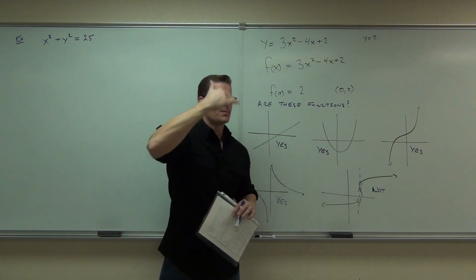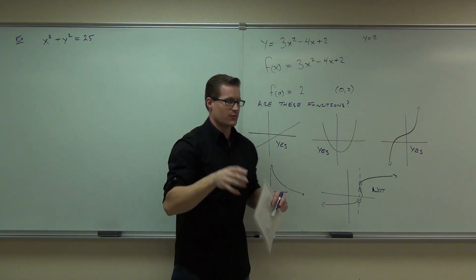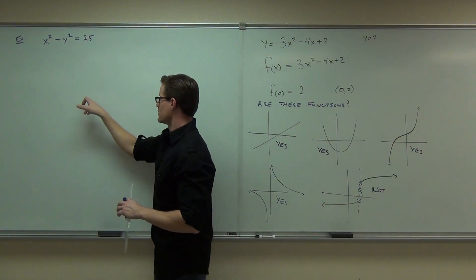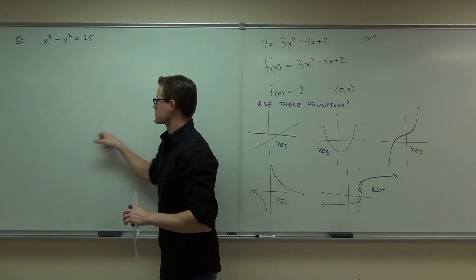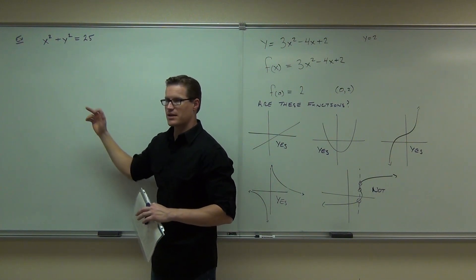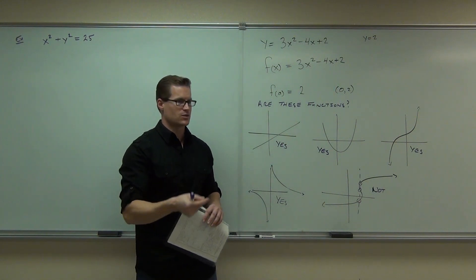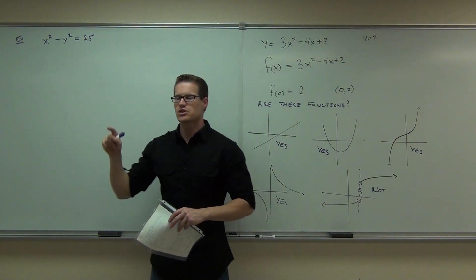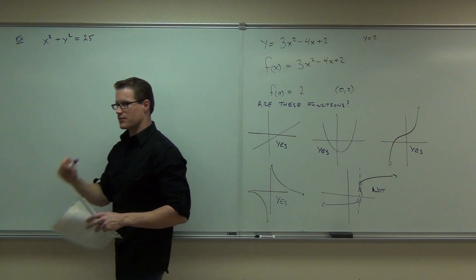It's a circle, so it's not going to pass the vertical line test. If we actually graph this, it's a center at 0, 0, radius of 5. It's certainly not going to pass the vertical line test. However, can you see it formulaically as well? Specifically, can you solve this for Y and see that this is not a function?